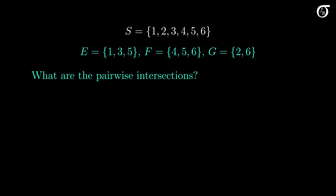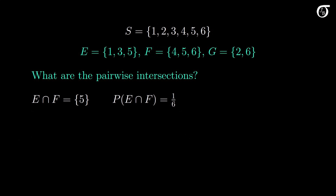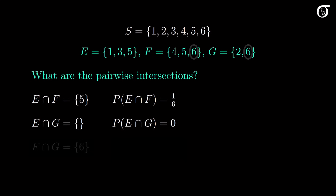Now suppose we're interested in the pairwise intersections. The intersection of E and F is the set of sample points in both E and F — that's just the number 5 — so the probability of their intersection is 1 out of 6. The intersection of E and G contains no elements, so it is the empty set; E and G are mutually exclusive and the probability of their intersection is 0. The F and G intersection contains just the number 6, with probability 1 out of 6.